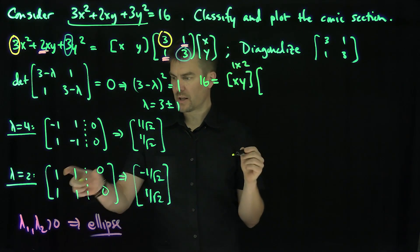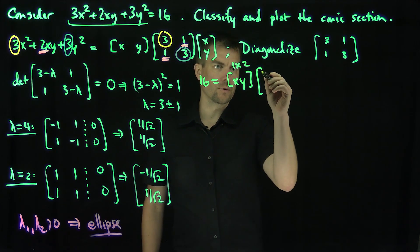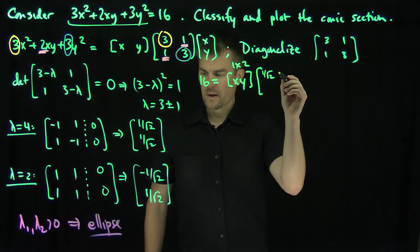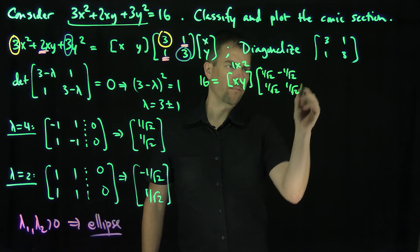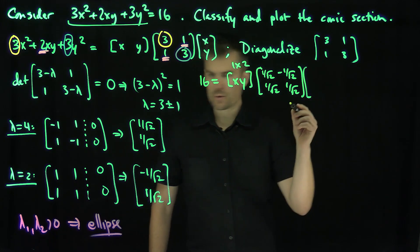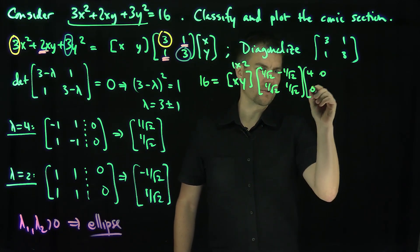And then we're going to do P, which is the diagonalized matrix. I'm going to have [1/√2, 1/√2; -1/√2, 1/√2]. Our diagonal matrix D, which is going to be [4, 0; 0, 2].